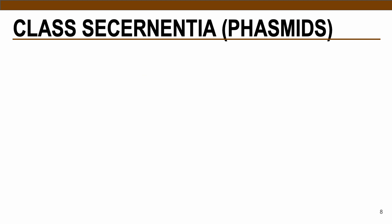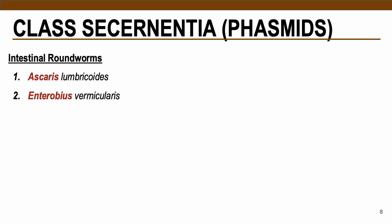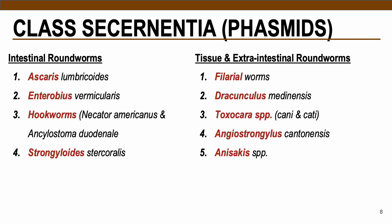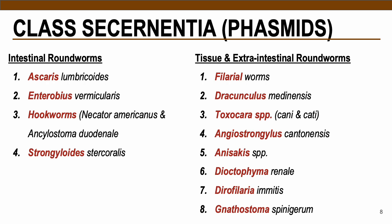Phylum Nematoda is divided into two classes. The first class we will discuss is class Secernentea, also known as phasmids — phasmid roundworms that contain posterior or caudal chemoreceptors. Phasmids are divided into two classifications: intestinal, and tissue and extraintestinal roundworms, which we will cover one by one.